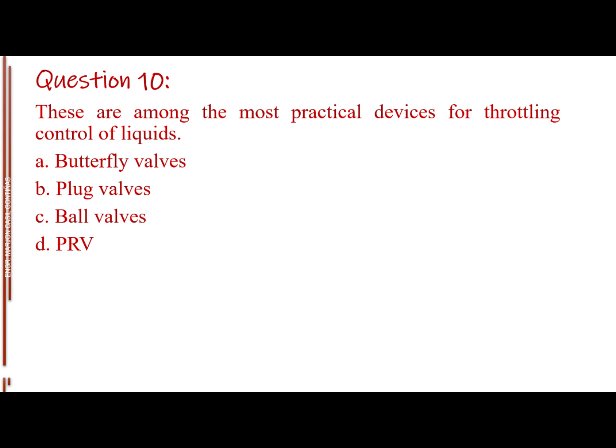Question number 10. These are among the most practical devices for throttling control of liquids. Letter A, butterfly valves. Letter B, plug valves. Letter C, ball valves. Letter D, PRV. The answer is letter A, butterfly valves.